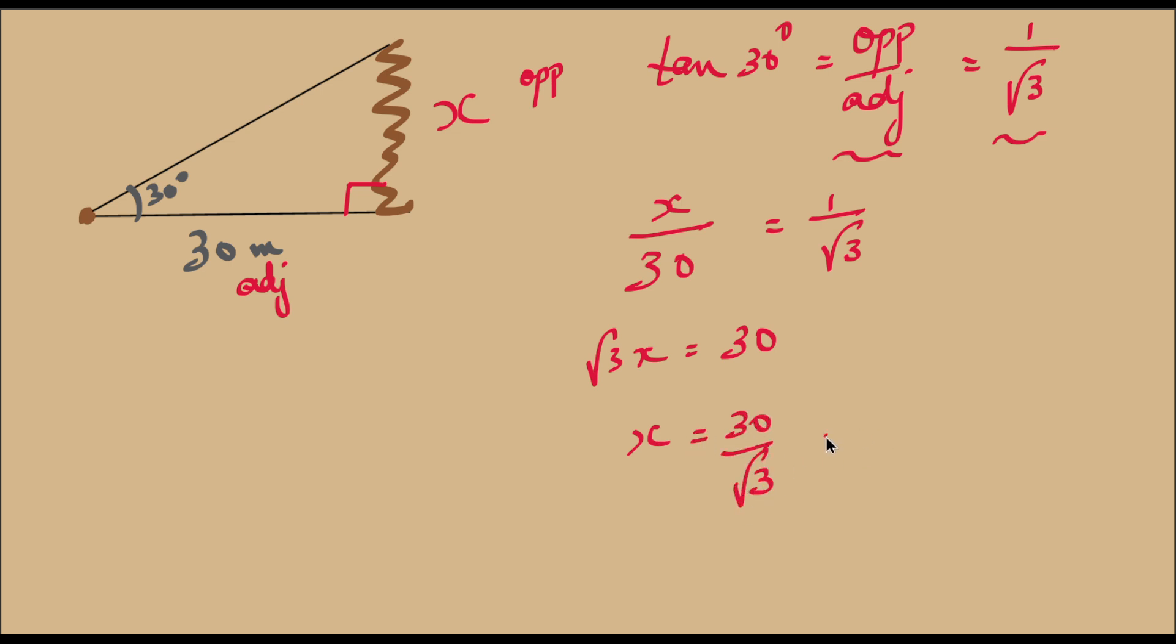So this can be simplified. 30 can be written as 3 times 10 by root 3. And 3 is root 3 times root 3, right? Root 3 squared is 3. So if I write 3 as root 3 multiplied by root 3, we can divide both numerator and denominator by root 3. So we get the height of the tower as x equals 10 root 3 meters.